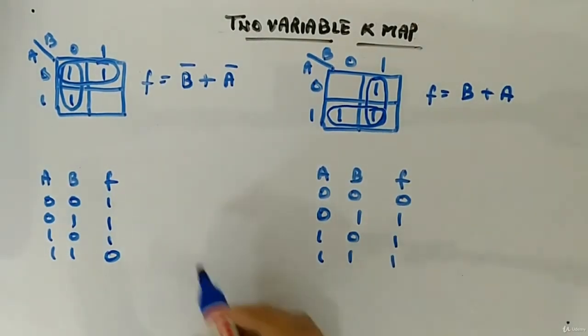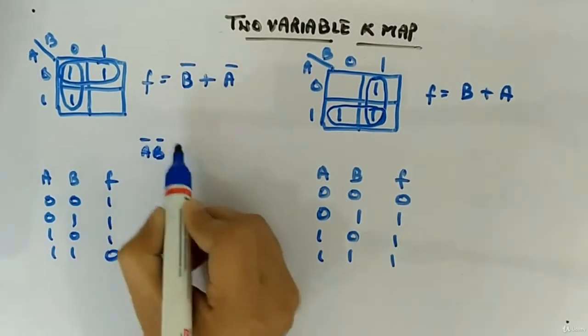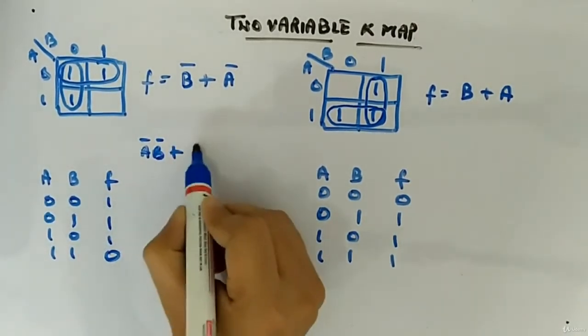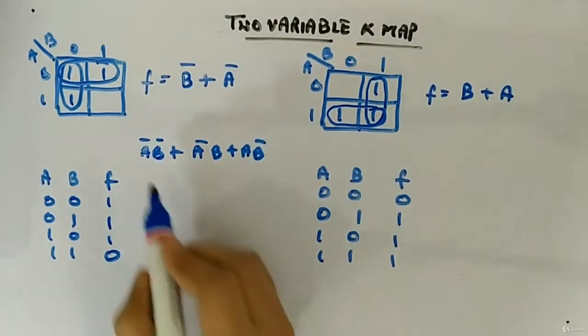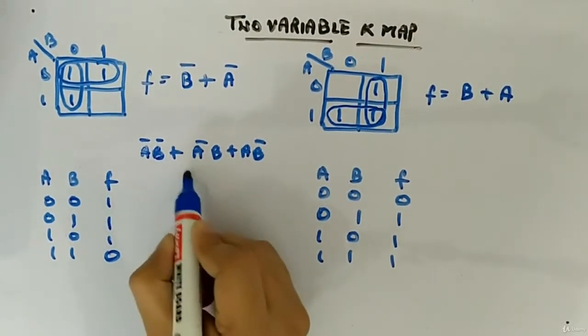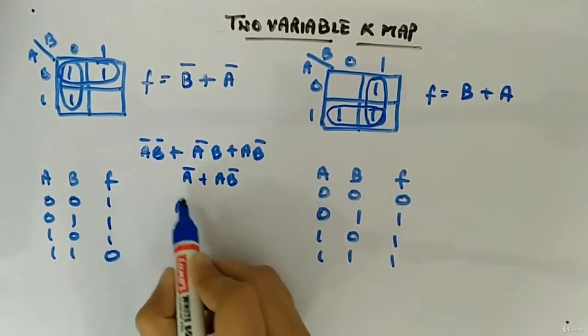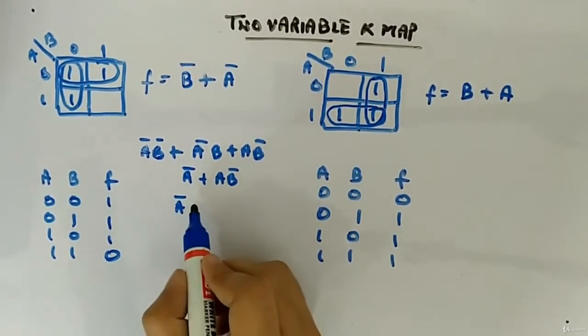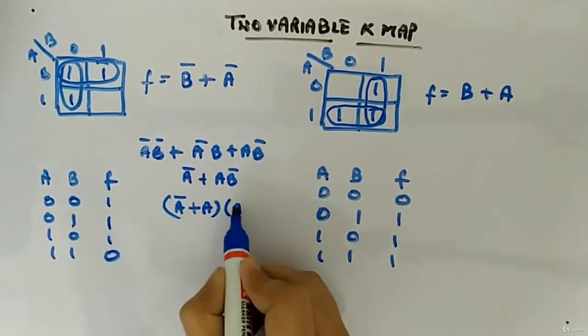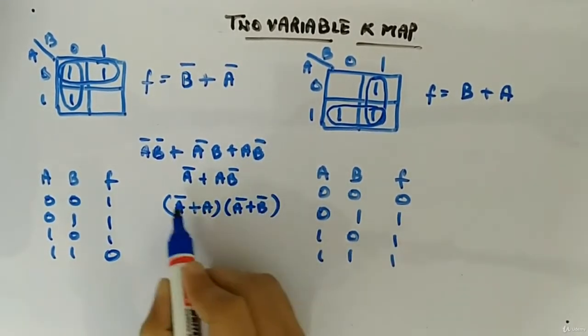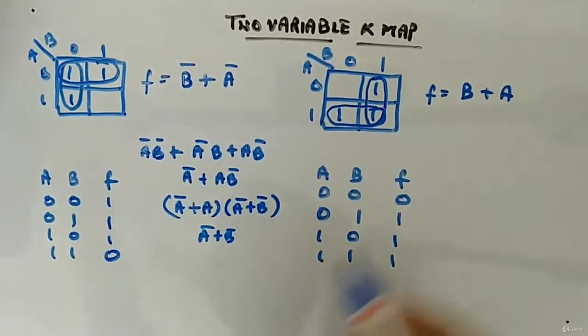So even if you will do the Boolean algebra you will get the same thing: A bar B bar plus A bar B plus A B bar. A bar you can take common, so you will get A bar plus A B bar. You can use the rule A and A bar plus B bar. So this will be one, so you will get A bar plus B bar, which is same.